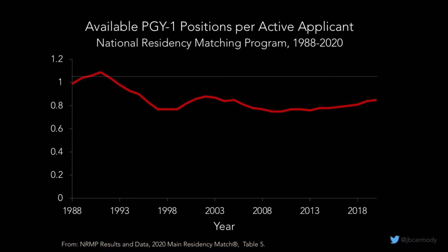Event number two was a change in the residency application market such that the number of residency applicants began to outpace the number of available positions. This graphic shows the ratio of positions to applicants. If you go back to 1992, the first year of the USMLE, there were actually more PGY-1 positions available than there were applicants in the NRMP match, but every year since there have been more applicants than positions. That disparity has been stable for about the past 20 years, but to maximize their chance of selection, residency applicants began to apply to more and more programs.